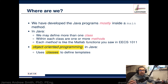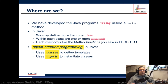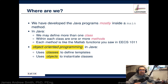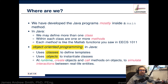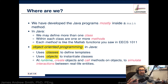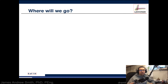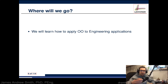In object-oriented programming in Java, we use classes to define templates — those templates are a bit like plans or blueprints. We take those classes and instantiate them, creating instances called objects. At runtime we create objects and call methods on them to simulate interactions between objects, similar to interactions you'd see between real-world entities. We're going to learn how to apply object-oriented paradigms to engineering applications.